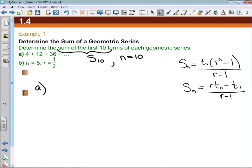For Part A, I'm going to identify what I can from the information given to us. I can see that the first term is 4.